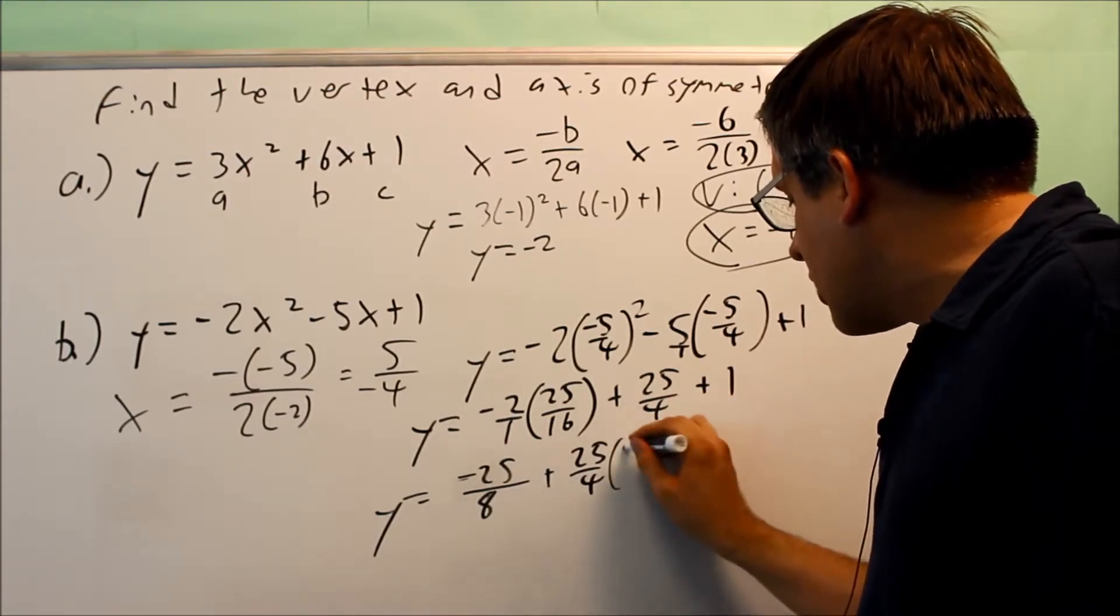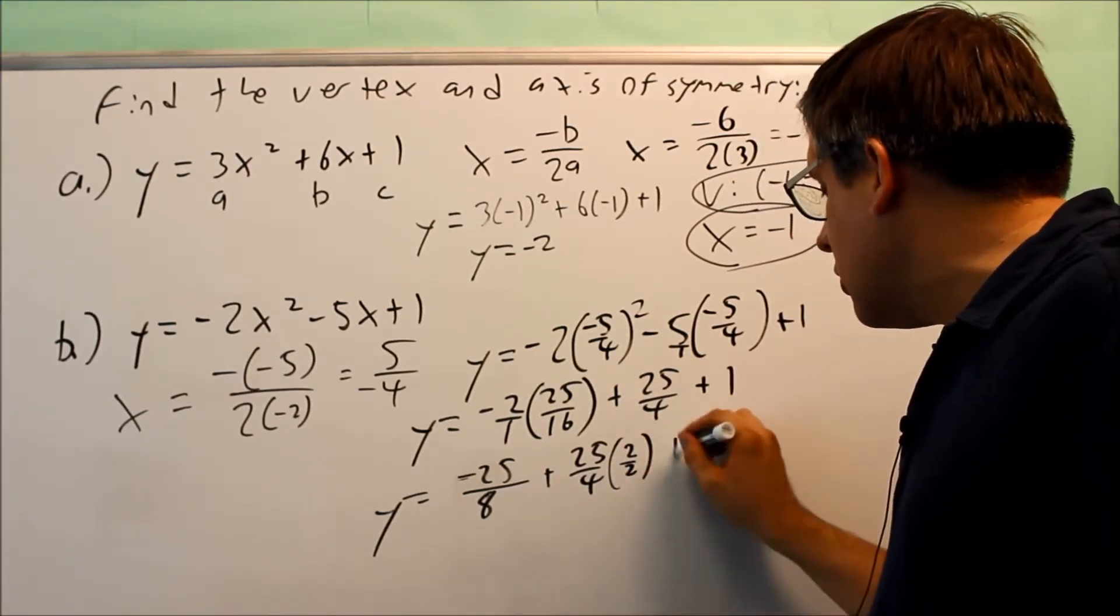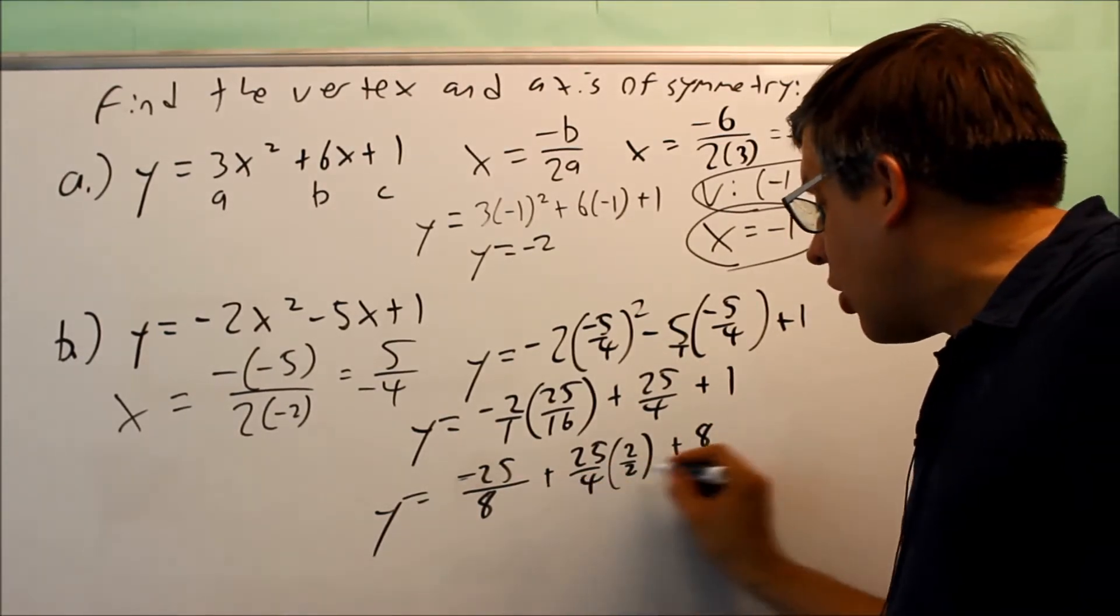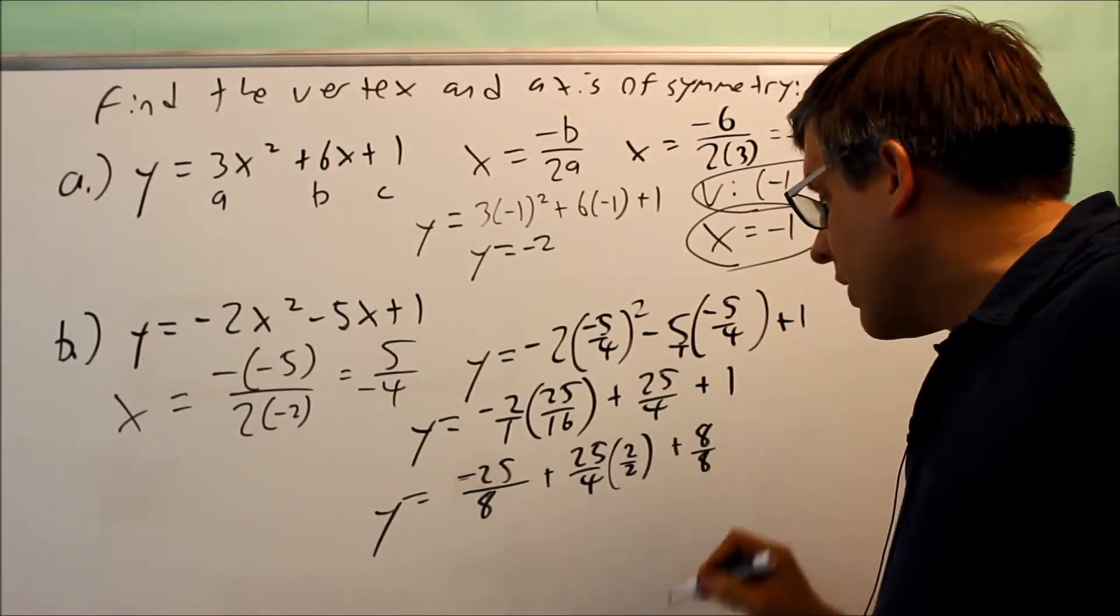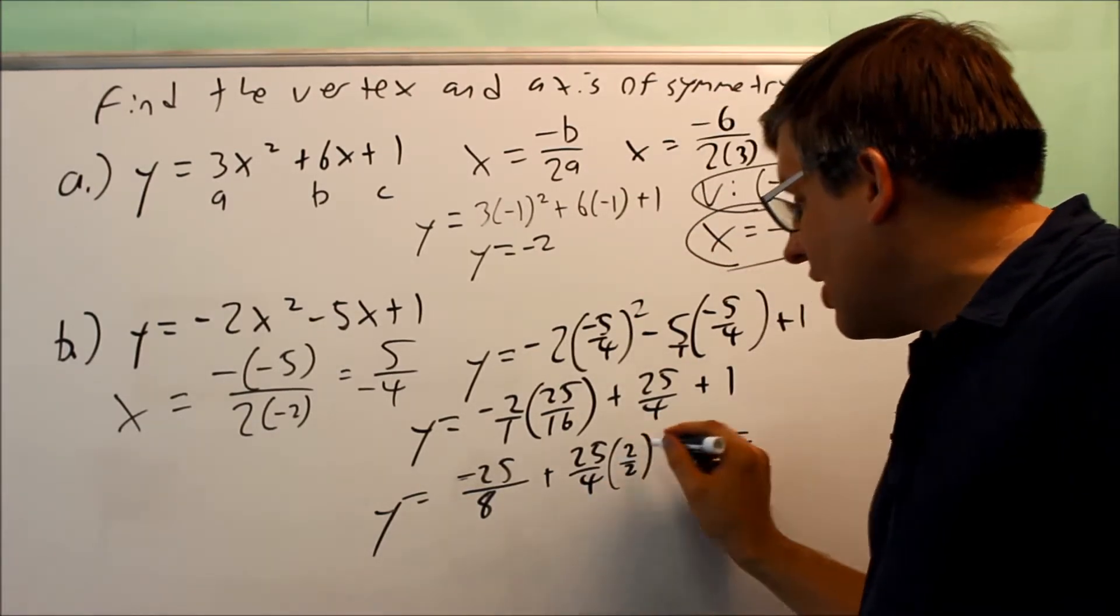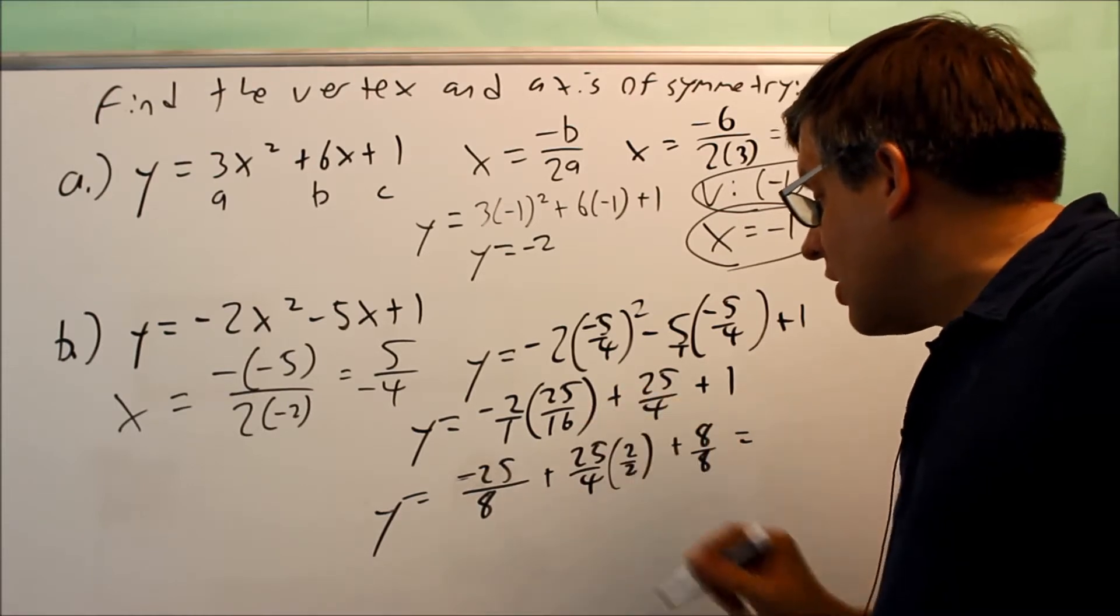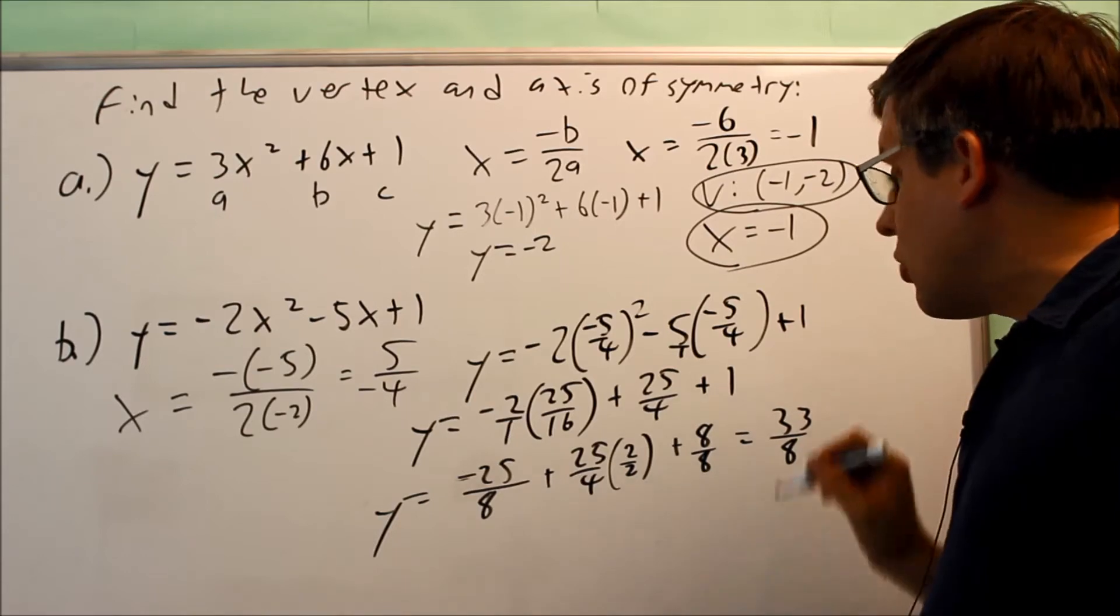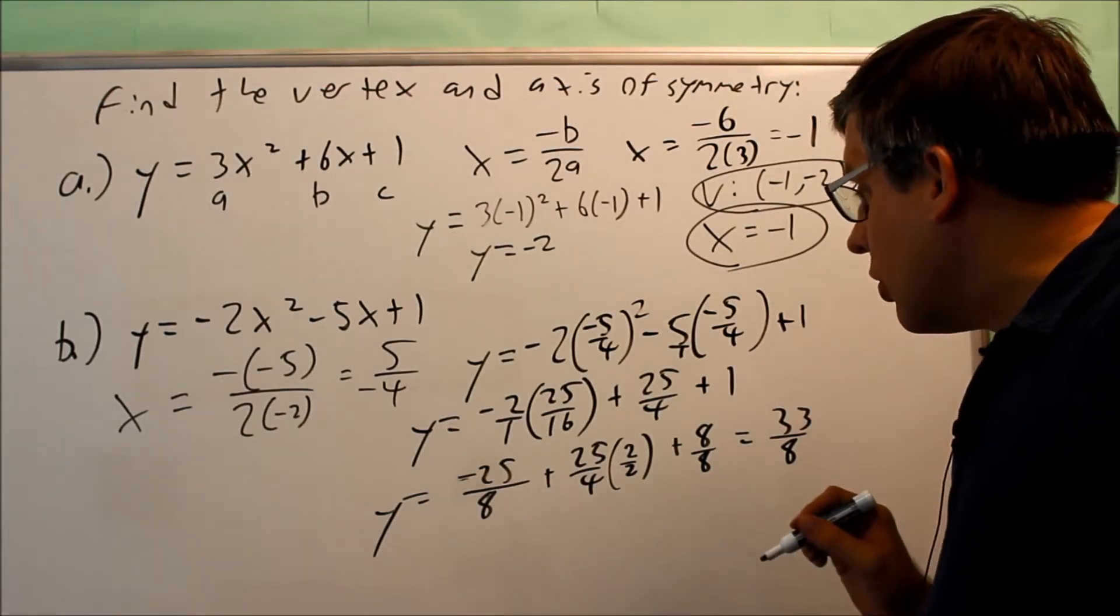So 25 fourths, I'm going to multiply that by 2 over 2. And then the 1, I'm going to write that as 8 over 8. So then that way, all of these have the same denominator. If you simplify that, then that's going to end up giving us 50 minus 25, that's going to be 25 plus 8 is 33. So we get 33 eighths as our y coordinate.